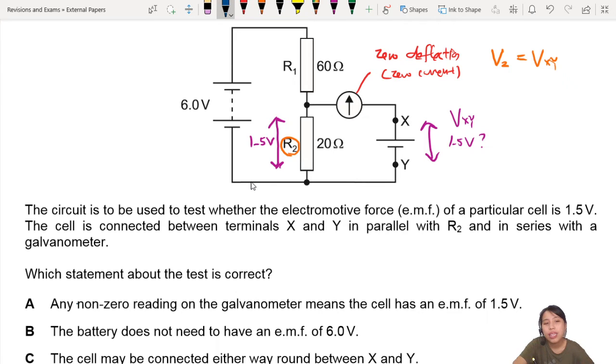B: The battery does not need to have an EMF of 6.0V. No, it's specifically designed that way. This 6 volts is linked to how much will be here, and we want it to be 1.5 volts so that it balances out with VXY. You gotta have 6 volts there. It's fine-tuned exactly so that we can find the balance point.